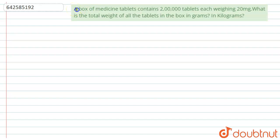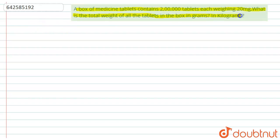Hello everyone. The question is: a box of medicine tablets contains two lakh tablets, each weighing 20 milligrams. What is the total weight of all tablets in the box — in grams and in kilograms? Let's see how we are going to solve it.